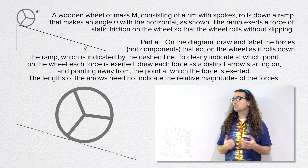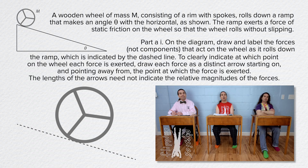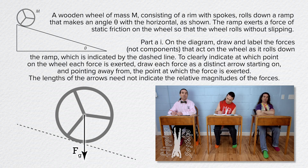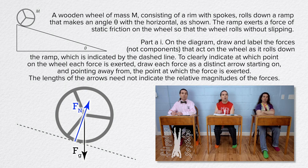The wheel has mass, so it has a force of gravity acting down on it at the wheel's center of mass. The wheel is touching the ramp, so there is a normal force acting on the wheel at the point of contact between the wheel and the incline. The direction of the normal force is perpendicular to the incline and upward, pointing toward the center of mass of the wheel.